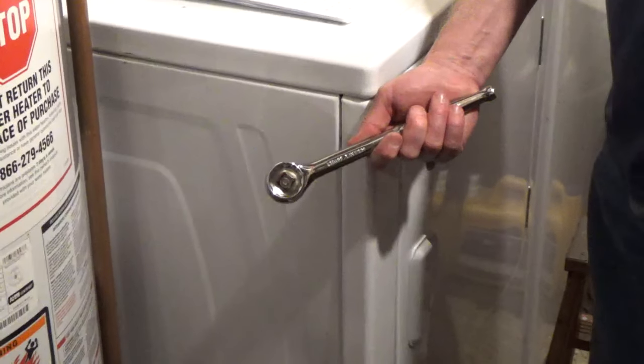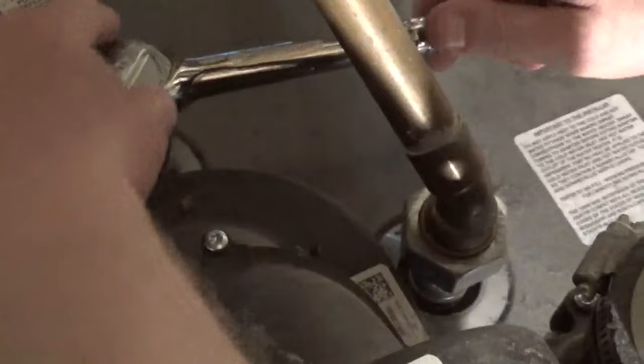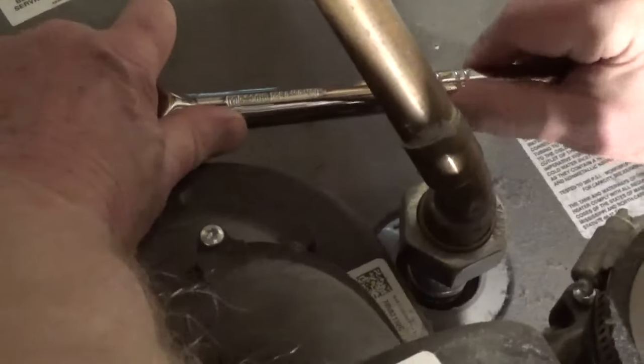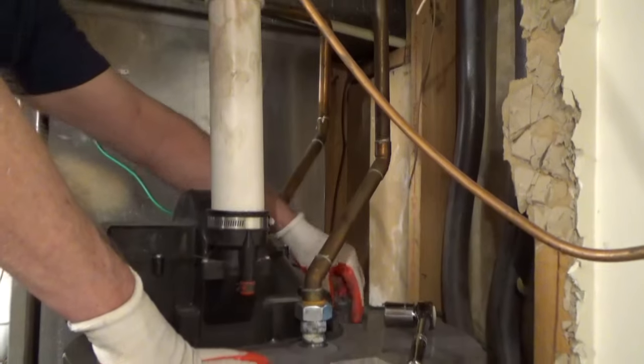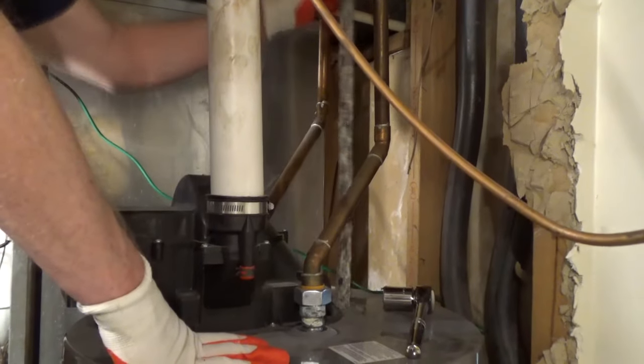Use a 1 and 1/16 inch socket and unscrew the old anode rod. Turn it counterclockwise. If it doesn't turn easily, slide a metal pipe over the socket handle for more leverage, or you can use an impact driver. Have someone hold the tank if it moves while unscrewing the anode rod. Lift out the old anode rod.